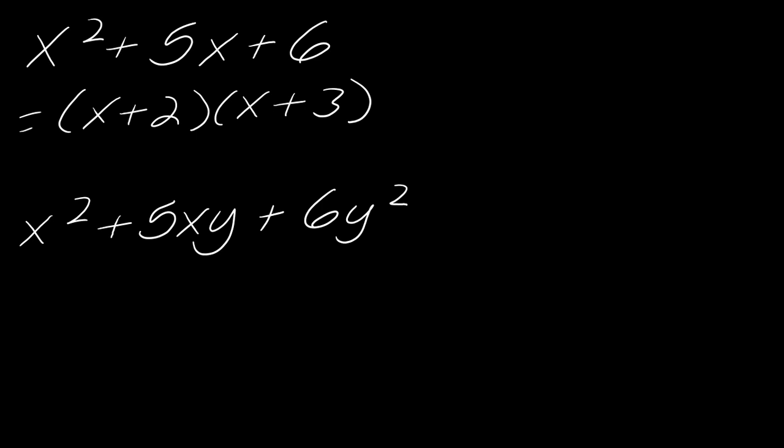And so now what happens if I just add an extra y in like this? Well, it's really still the same thing. The only thing that really changes is that now we need to make sure that instead of just getting 6, we get 6y squared. So it's going to be the same factoring, still x plus 2, but now it's x plus 2y and x plus 3y.